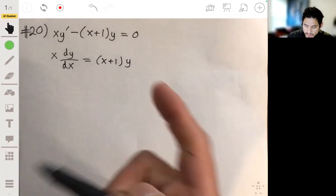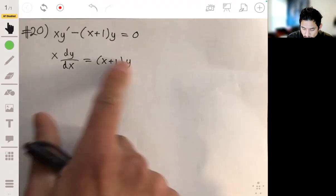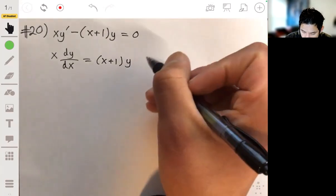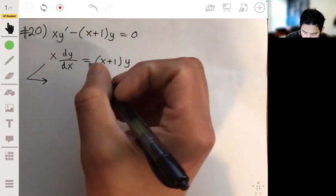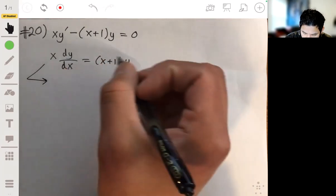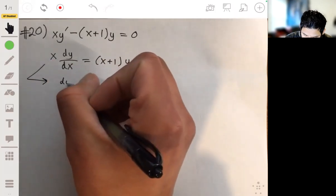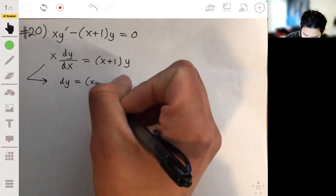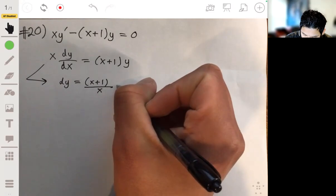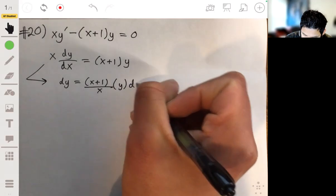Now let's divide each side by y. And then we're going to multiply both sides by dx and divide by x. So multiplying both sides by dx and dividing by x, we'll get dy being equal to x plus 1 divided by x times that y still, times dx.